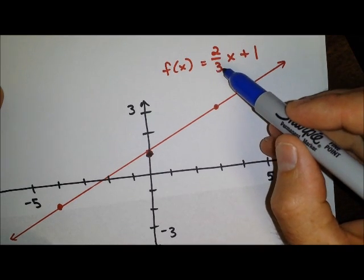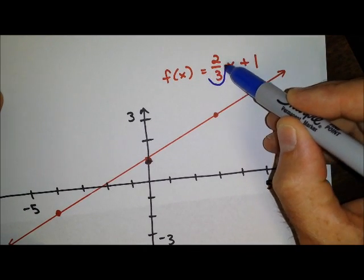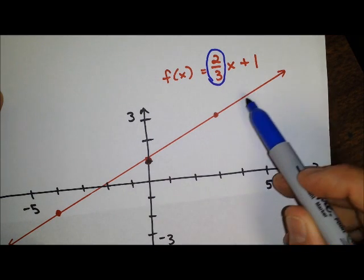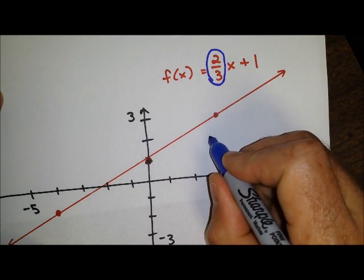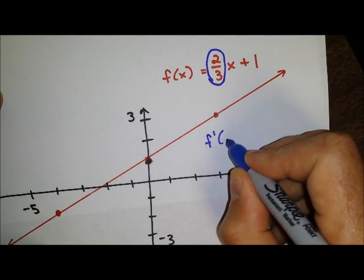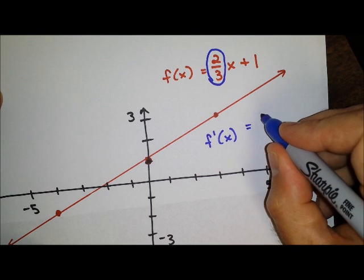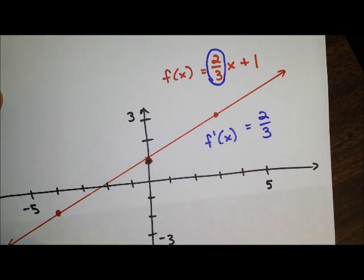We know y equals mx plus b. This value right here represents our slope, and that is not changing as we move along this line. So based on what we see here, I can say f prime of x, meaning the slope of f of x, is always going to be two thirds. And that's true with every line because the slope is constant. It does not change.